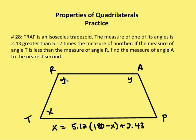So I'm going to say that Y is going to be 180 minus X, because we know that X and Y, the upper and lower base angles are going to be supplementary. So I say X is equal to 5.12 times the supplement of X plus 2.43. So again, one of the angles, let's say it's X, is 2.43 greater than 5.12 times the measure of another, which we call its supplement.